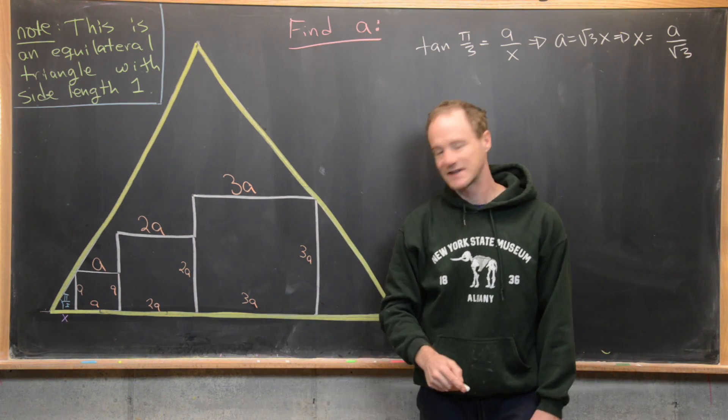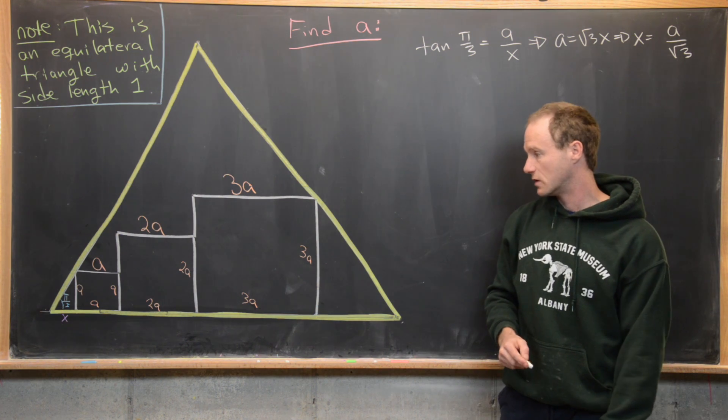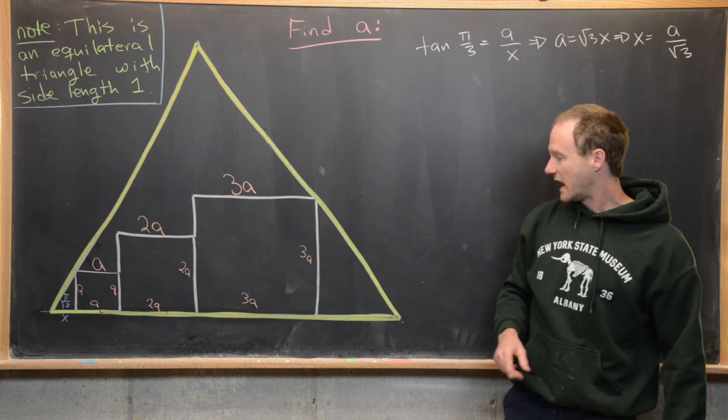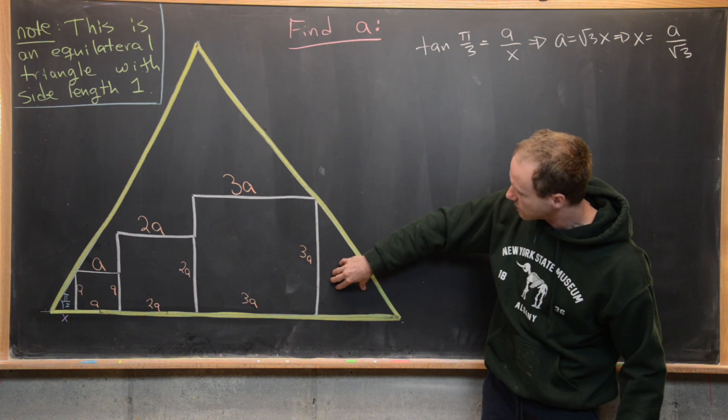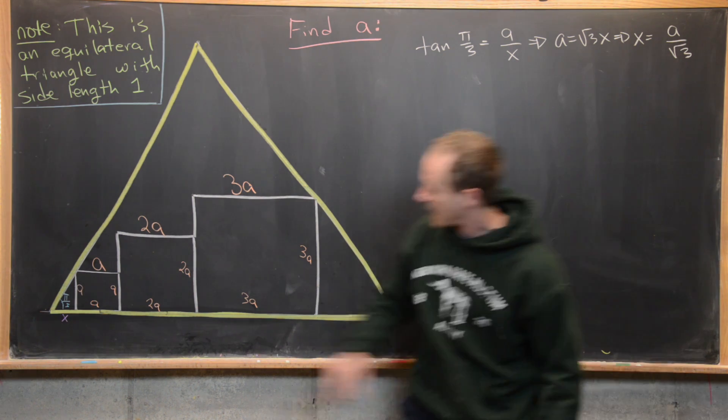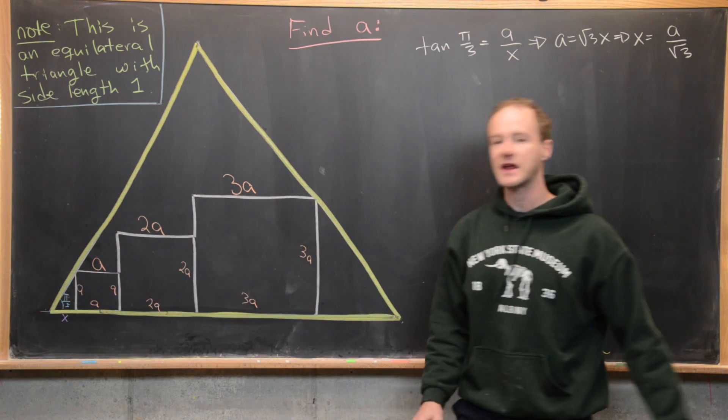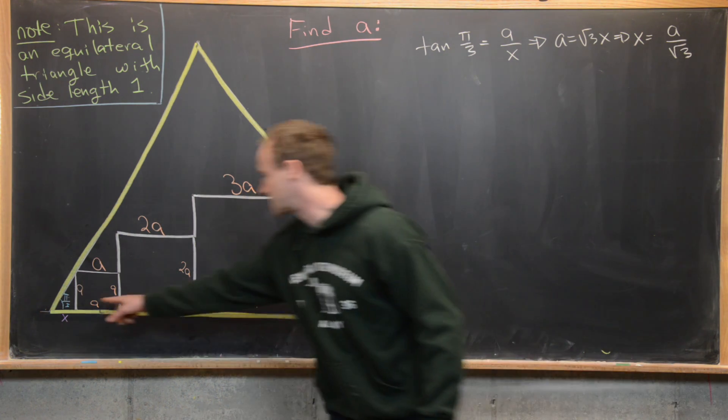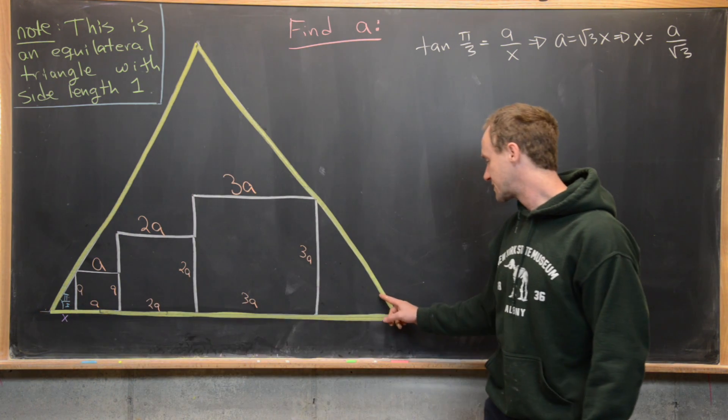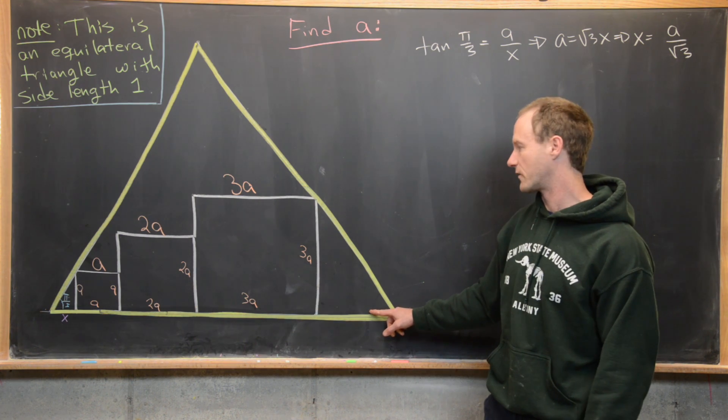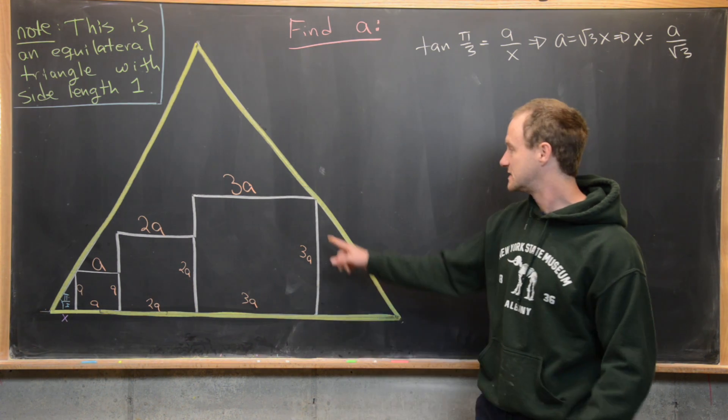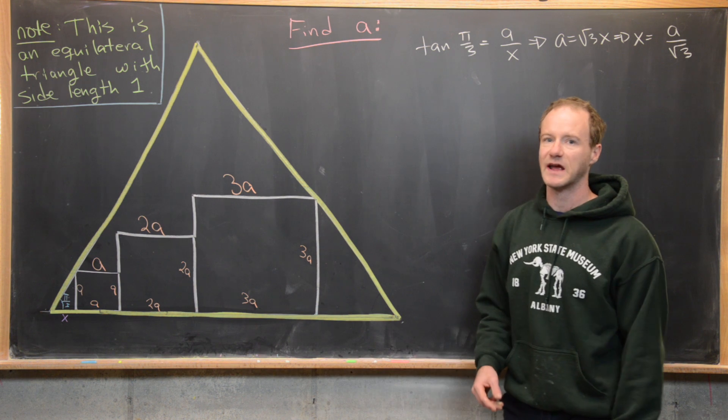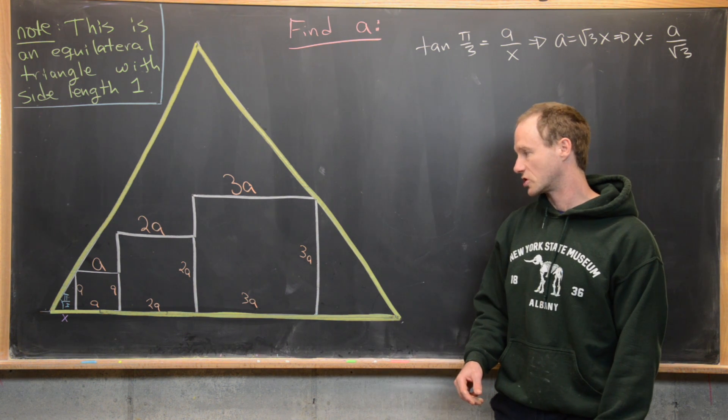Okay so now we've got x in terms of a which is good to know and then furthermore by the angle angle angle theorem we know that this triangle over here and this little triangle over here are similar. So we know that they both have right angles here and then next we know that this is also going to be 60 degrees or pi over 3 radians which means that this angle and this angle are the same and so by angle angle angle these are similar triangles.